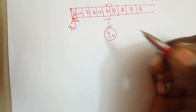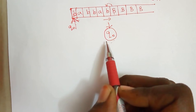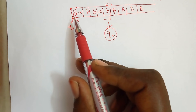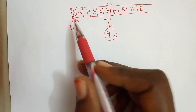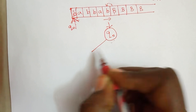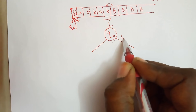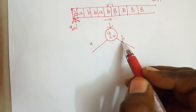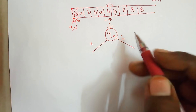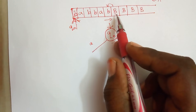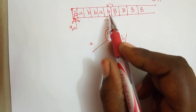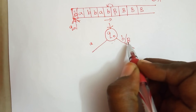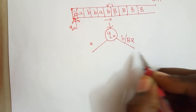Starting from state Q0, the first element can be either A or B, and we check both conditions. If the input is B, we cancel that B to blank and move right to state Q1. In Q1, we keep moving right regardless of whether we encounter A or B — both remain as-is — until we find the blank symbol.